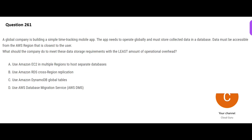Now let us look at the next interesting question. They are building a time-tracking application — the first key indicator is it is a mobile app, the second is they want to operate globally, like Uber. You must store collected data in a database, and data must be accessed from the AWS region closer to the user. So like Uber — if you are in the USA it goes to the US region, if you are in India it goes to the India region, and so on.